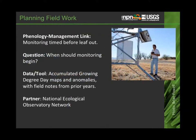Those are the tools we have. Here are a few examples of how they're being used across the country for different management questions. The first is planning field work: you might want your monitoring timed before leaf out to capture negative data — confirming a species wasn't in leaf on April 10th but was on April 20th. Folks at NEON, the National Ecological Observatory Network, are using our accumulated growing degree day map for the current and prior year, together with their field notes, to decide when they should go out — is it warmer in growing degree day terms this year, so should we go out sooner or later than last year?